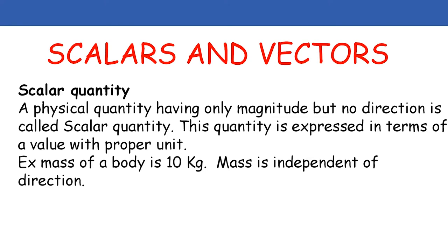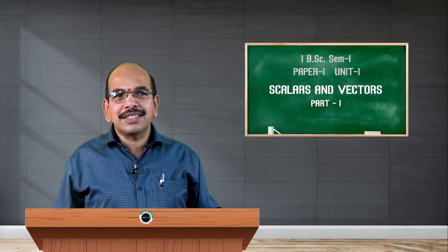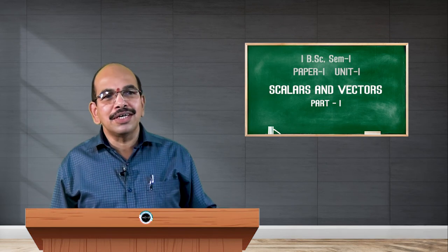A physical quantity having only magnitude but no direction is called a scalar quantity. This quantity is expressed in terms of a value with a proper unit. If you take an example of mass of a body, mass is a physical quantity. Suppose it is 10 grams — kilogram is its unit and 10 is its value — and this mass is independent of direction. So this type of physical quantity is called a scalar quantity.